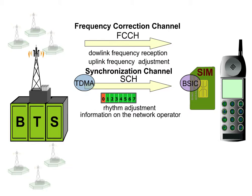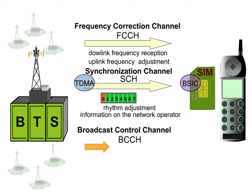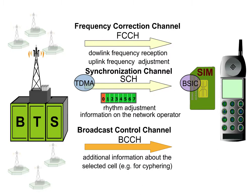While the mobile station uses the FCCH to adjust its frequency and the SCH for synchronization and network identification, the broadcast control channel, which is also sent by the BTS, supplies the mobile station with additional information about the selected cell, for example, for ciphering.